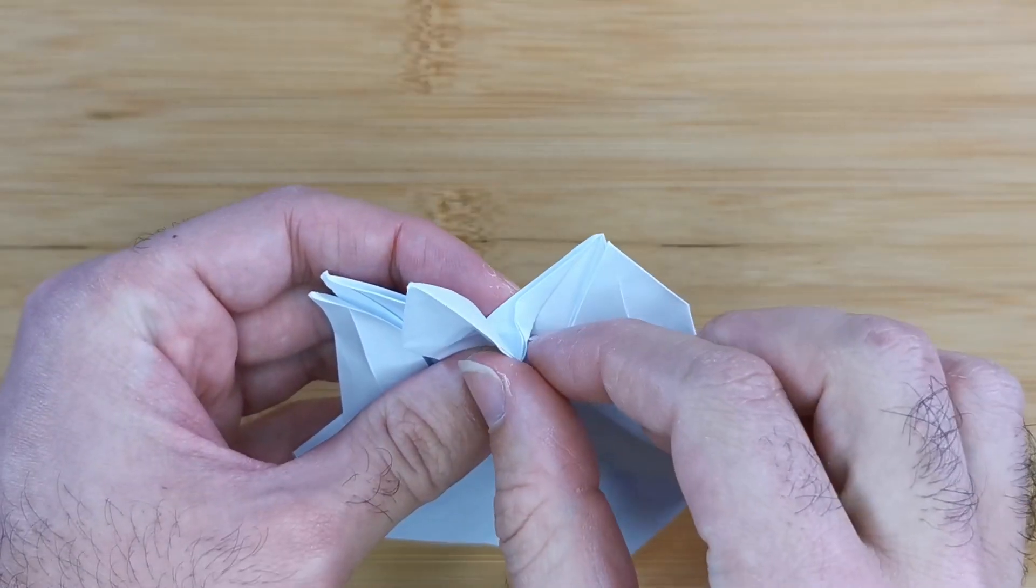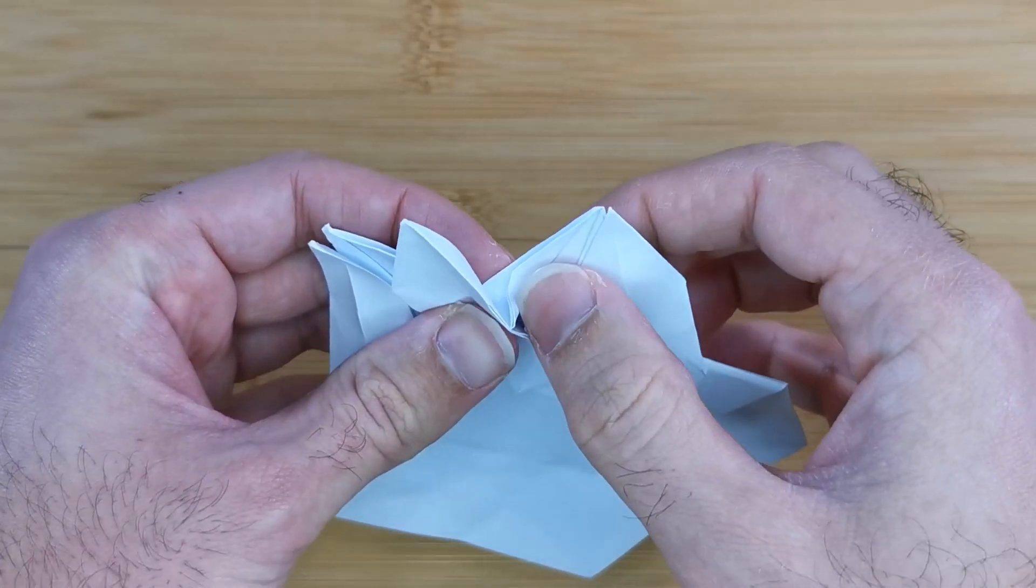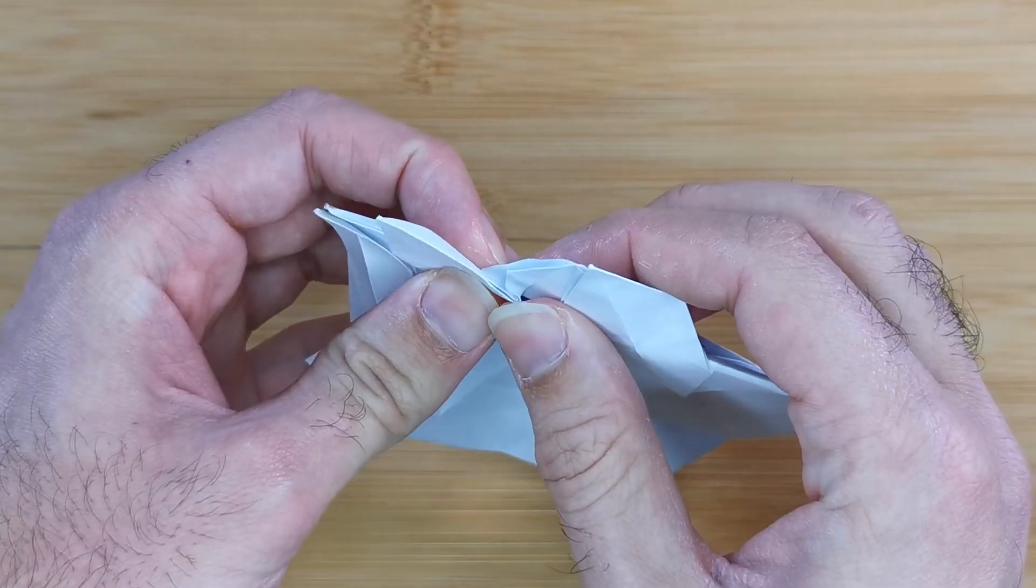And fold two creases. And here I am folding two creases in these flaps, flattening the branch.